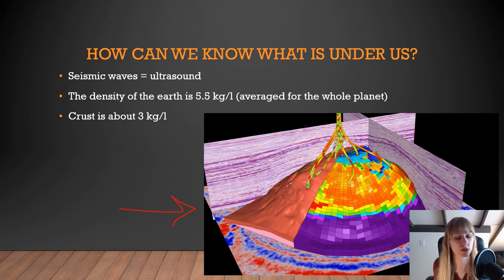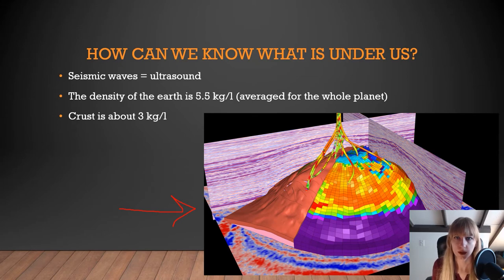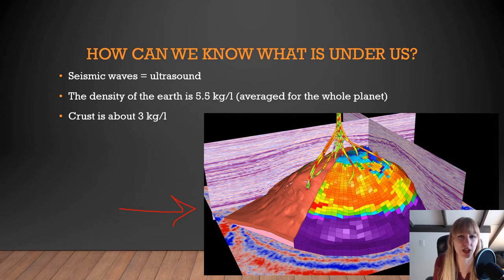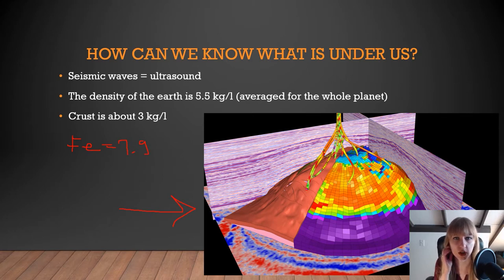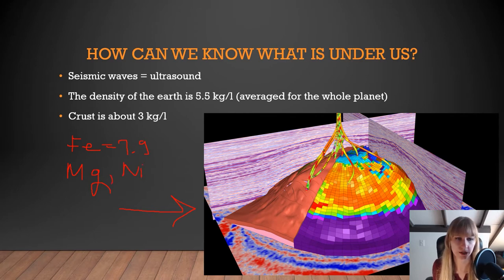Based on the crust, we know it is about 3 kilograms per liter, due to its composition being primarily silicate minerals, which are much lighter. Therefore, the interior — such as the mantle and core — must be greater than 5.5 kg/L so that the average equals such. The only element with a high enough density is iron, at 7.9 kg/L. We also know nickel and magnesium are prominent in the mantle, confirmed by volcanic activity bringing up olivine, which is primarily nickel, magnesium, and iron.